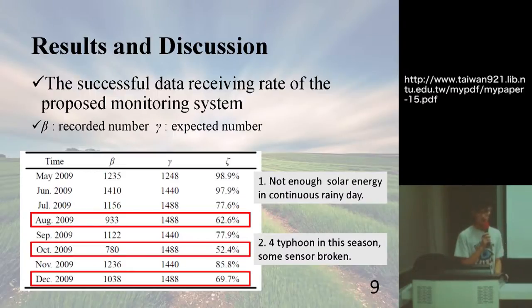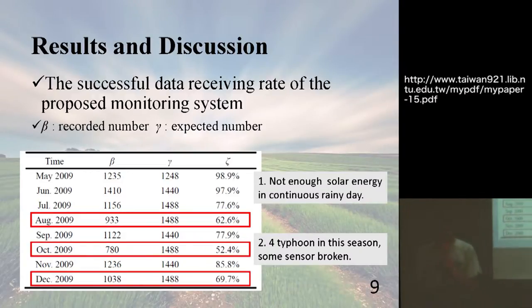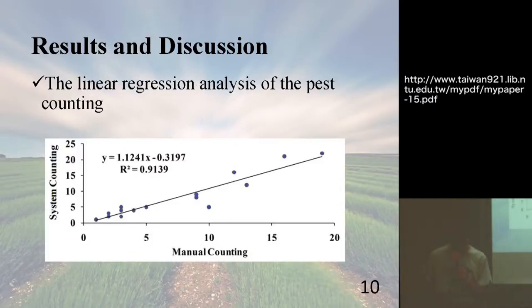And this is the successful data receiving rate of the proposed monitoring system. And as you can see, these three numbers are very low because of two reasons. In these three months, there is the rainy day so the sun is very less, so the solar system can't get energy. We have no energy so we can't receive the data back. And in that season there are four typhoons, so it is difficult for us to send back the message.